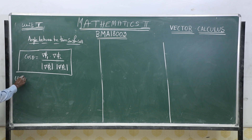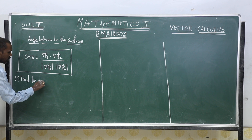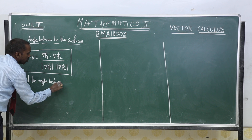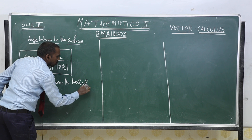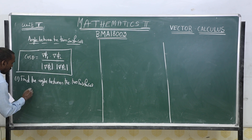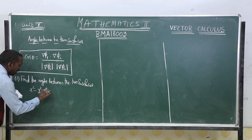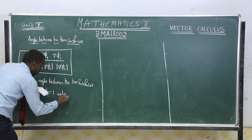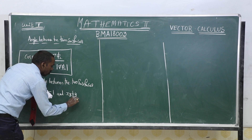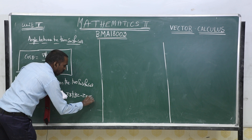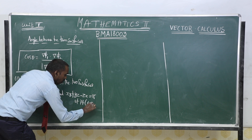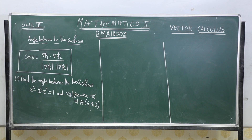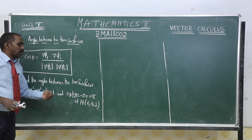The problem is: find the angle between the two surfaces x²-y²-z²=1 and xy+yz-zx=18, at the point (6, 4, 3). We have to find the angle between these two surfaces at that particular point.